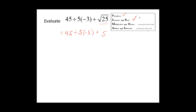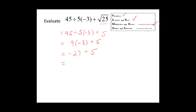We write the rest of the problem and move to multiplication and division, working left to right. Division appears first: forty-five divided by five equals nine. Then we multiply nine times negative three. Nine times three is twenty-seven. The two numbers have different signs, so the product is negative twenty-seven.